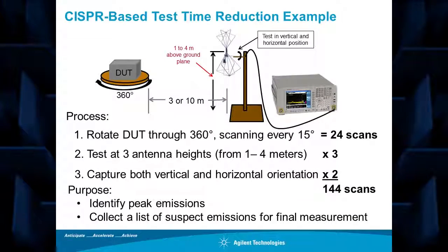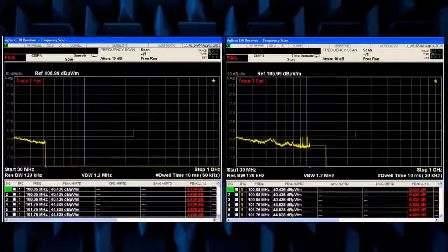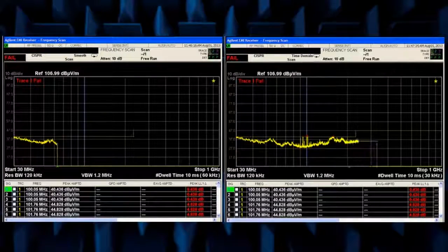To find the point of maximum radiation, hundreds of scans must be made for different combinations of turntable angles, antenna heights, and antenna orientation. The CISPR dwell time requirement makes scanning time consuming.